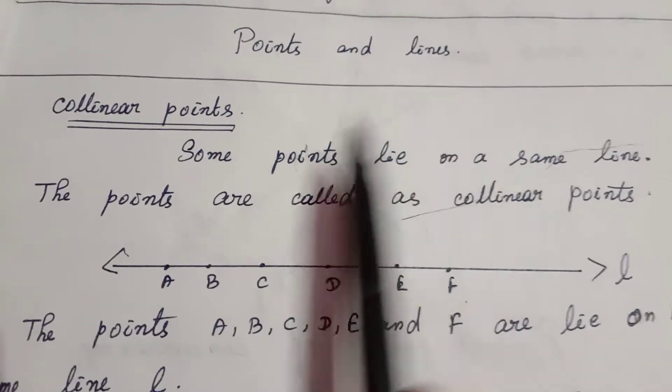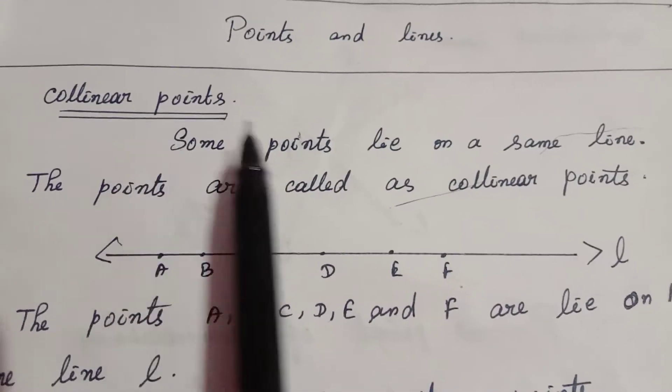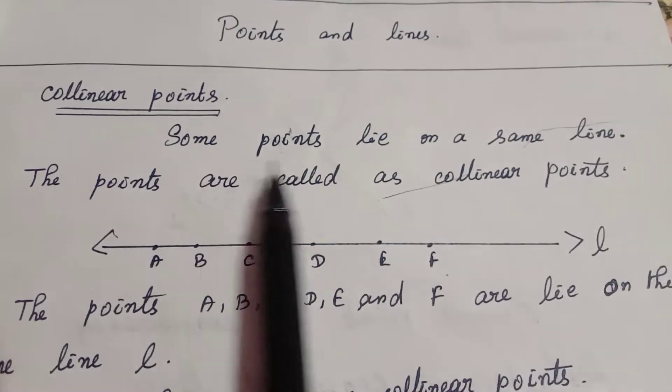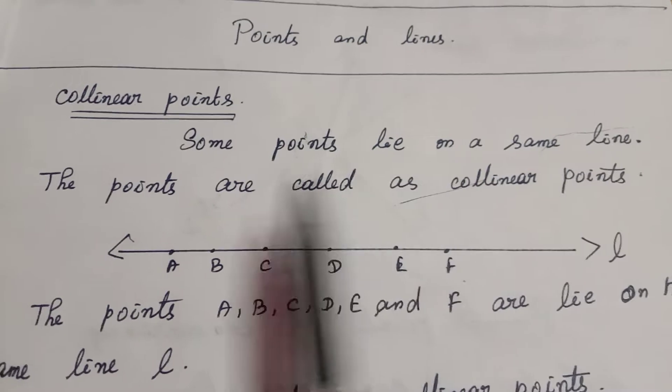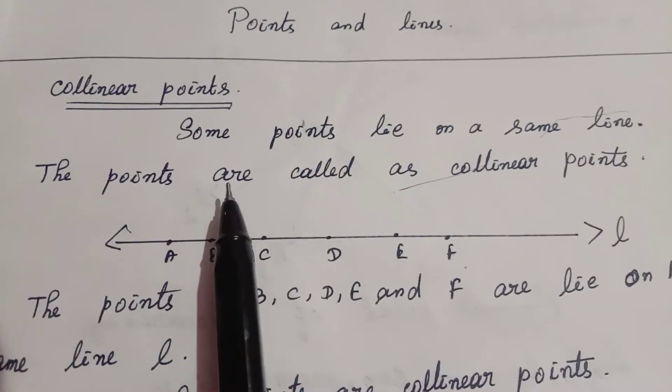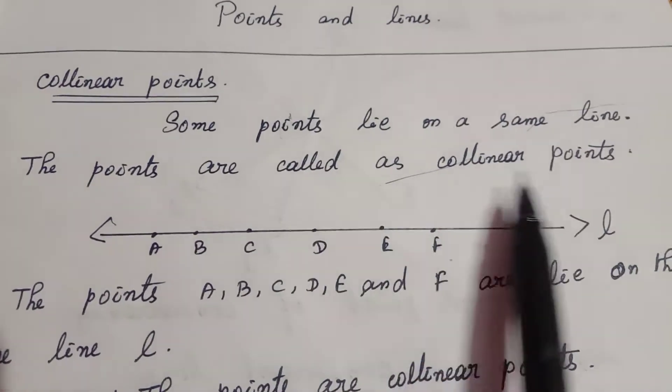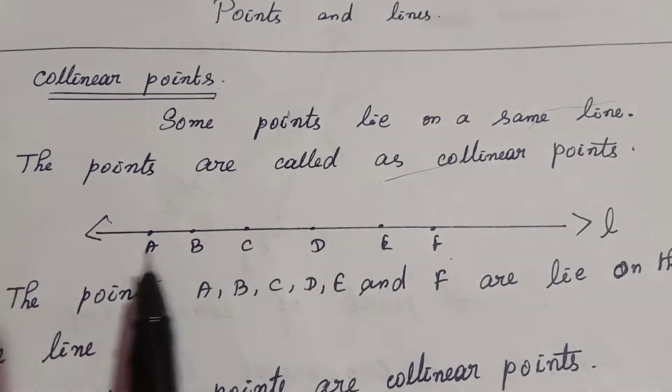Points and lines. Collinear points — some points lie on the same line. These points are called collinear points.